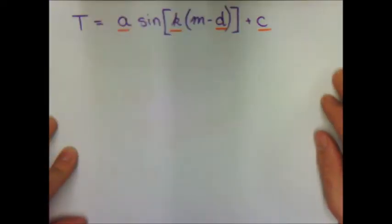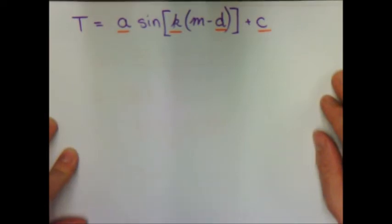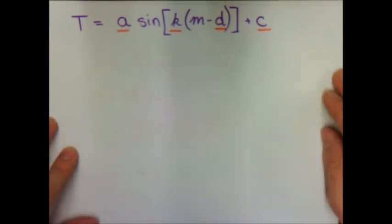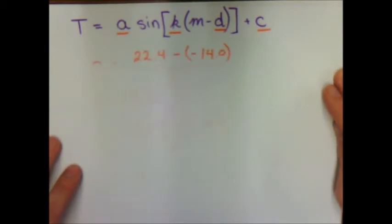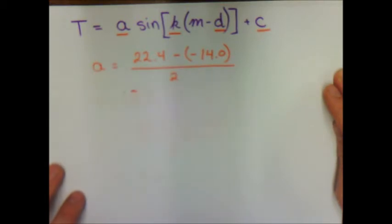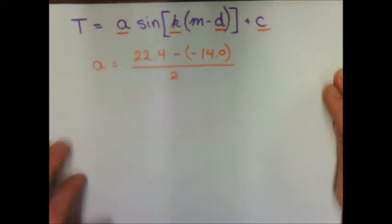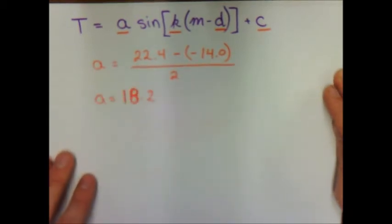Let's first find a, the amplitude for this situation. The amplitude is half the difference between the maximum and minimum temperatures. I find the maximum temperature, subtract the minimum temperature, and divide by 2, discovering that the amplitude a is 18.2.